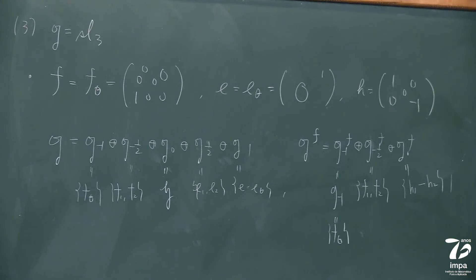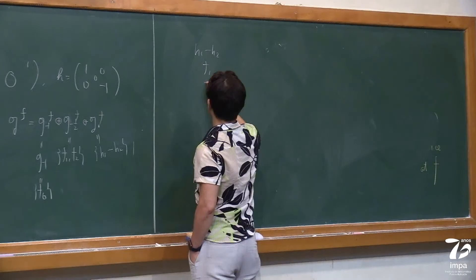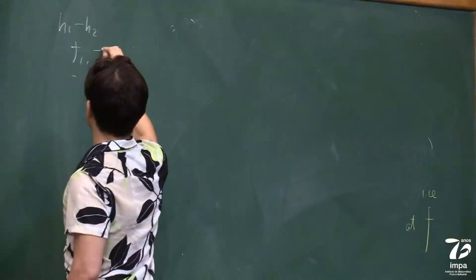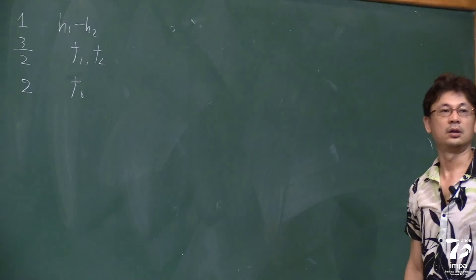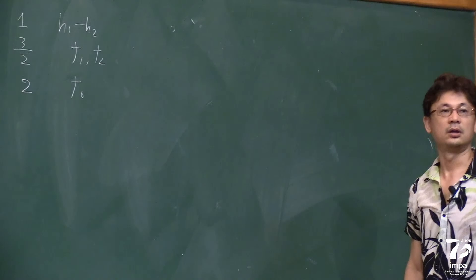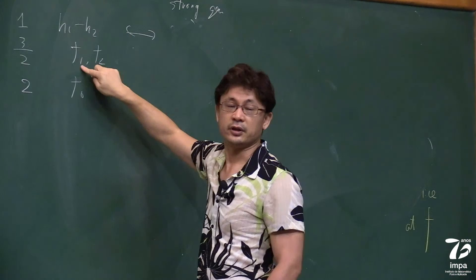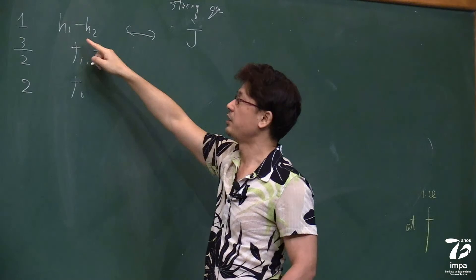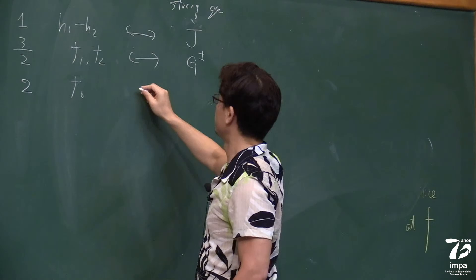The centralizer of F is four-dimensional. G_0^F consists of H_1 minus H_2, G_{-1/2}^F is spanned by F_1 and F_2, and G_{-1}^F is spanned by F_theta. The basis gives conformal weights: H_1 minus H_2 has weight 1, F_1 and F_2 have weight 3/2, and F_theta has weight 2.